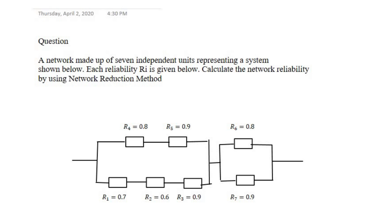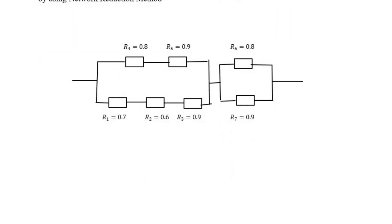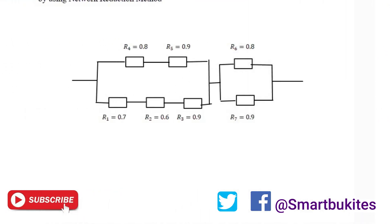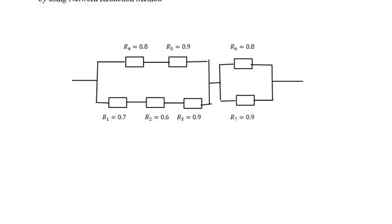The question reads: a network made up of seven independent units representing a system is shown below; each reliability R_i is given. Calculate the network reliability using the network reduction method. Remember in our last class I explained how we can use the network reduction method — it is quite straightforward, just the combination of the addition law and the multiplication law. We continue reducing our system until we get to the final answer.